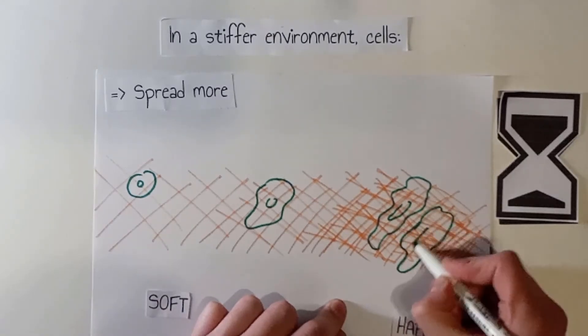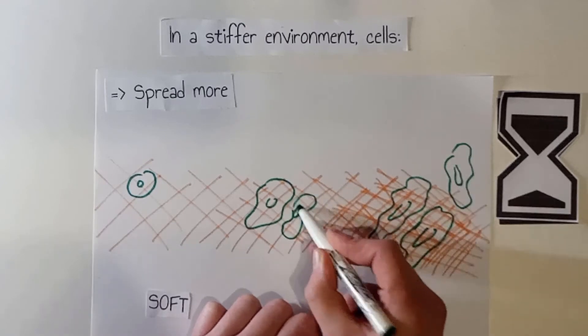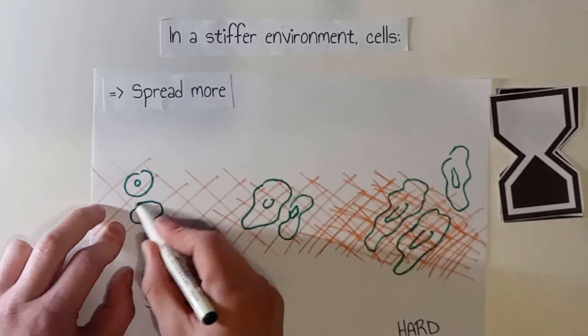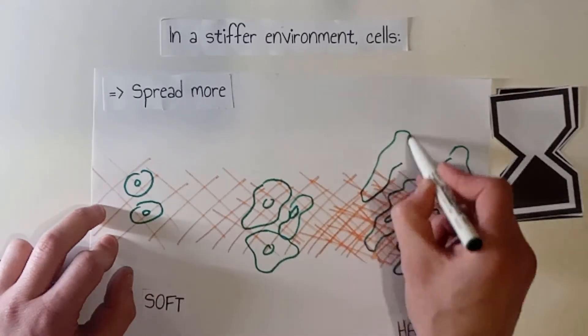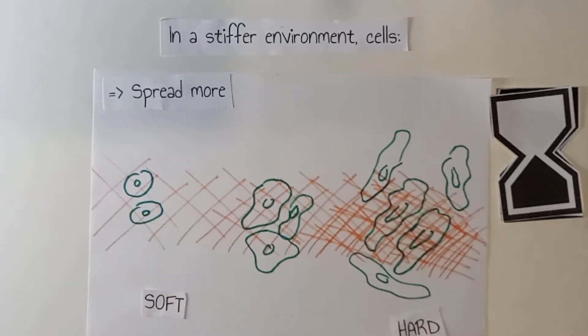As shown here, cells on a softer matrix will proliferate slower than on a harder one. After the same time scale, there are more new cells in the stiff part of the matrix than on the soft part of it.